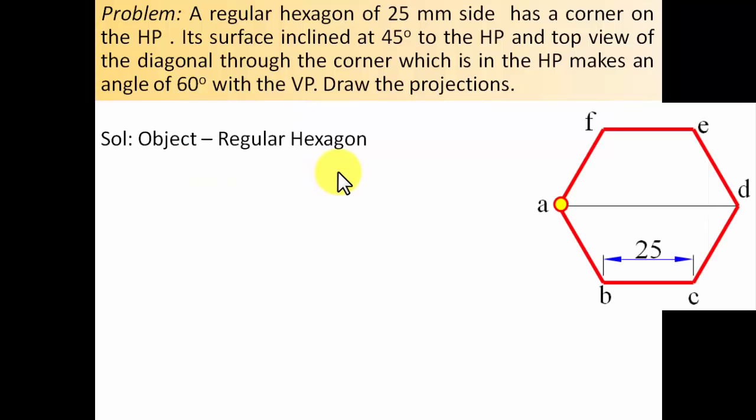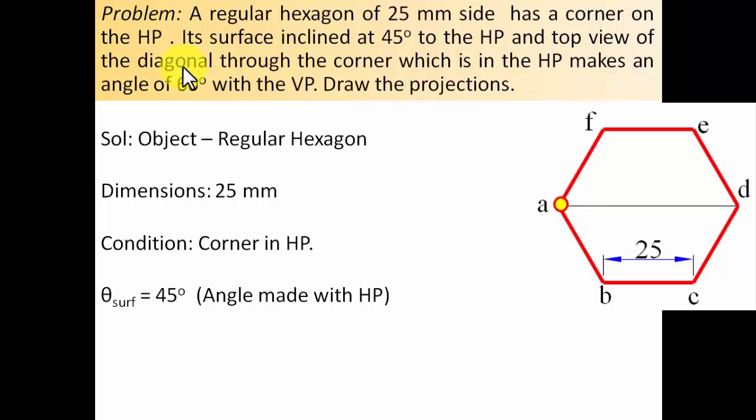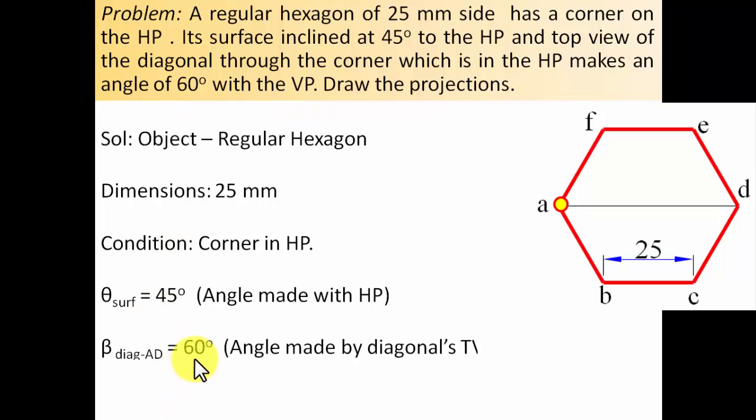Let's extract data from this. The object is a regular hexagon, 25 mm side. The condition given: corner on HP. The surface is at 45 degrees to the HP, so theta surface equals 45 degrees. The top view of the diagonal through the corner in the HP makes an angle of 60 degrees with the VP — the angle that the top view makes with the VP is denoted by beta, so beta diagonal equals 60 degrees.